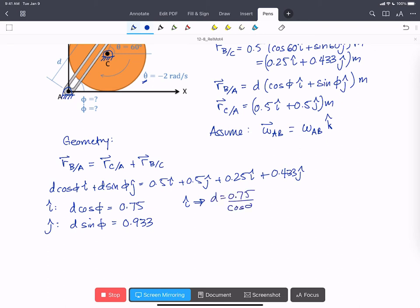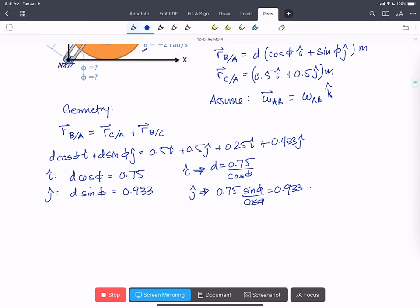D cos phi equals 0.75, D sine phi equals 0.933. This gives us tan phi equals 1.244. And using that we can find that phi equals 51.2 degrees and D equals 1.20 meters.